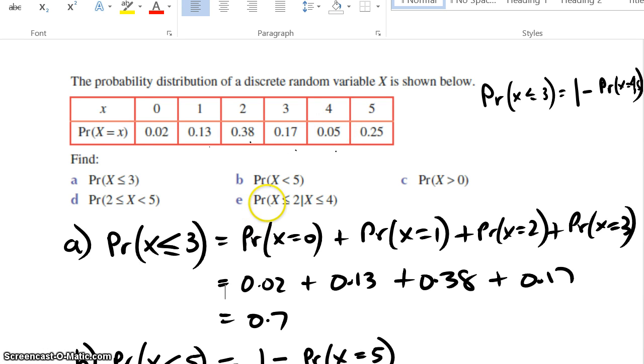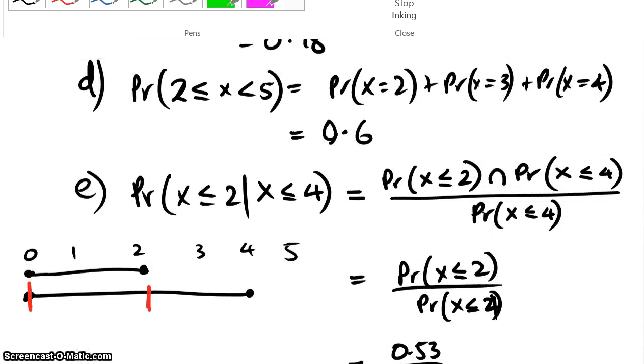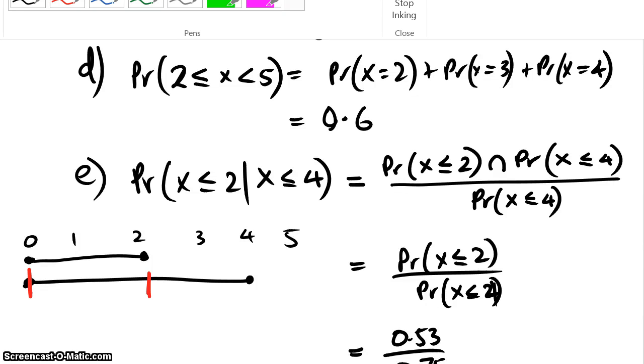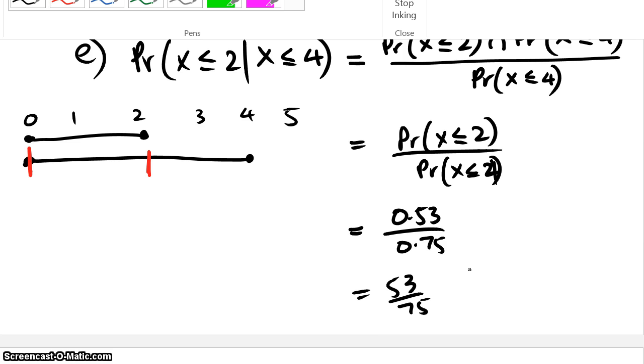Now the last one says what's the probability that x is less than or equal to two, given that we know it's less than or equal to four. All that essentially happens in that case is that we've actually just ruled out one option - we've said that is not possible. So our sample size, rather than being all of that, is actually now just this - this becomes a hundred percent. How do I do this? I draw a number line because that's how I understand these things. I go from zero to four and from zero to two, and I work out where those two things intersect. It just so happens to be between zero and two. So therefore the probability x is less than or equal to two, divided by the bottom, which is the probability that x equals four, ends up being 0.53 on 0.75, so 53 on 75.